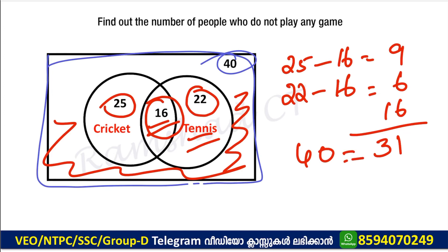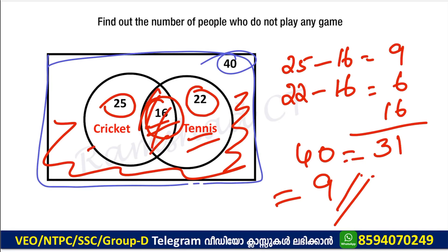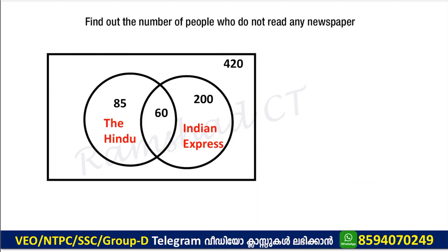The total comes to 41, giving 90. Now find out the number of people.